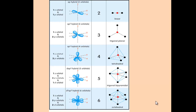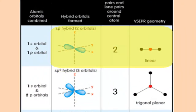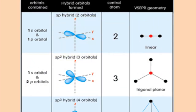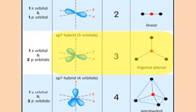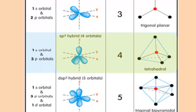Another item I'll point out is that the electron pair geometry of the central atom corresponds directly to the type of hybridization that central atom underwent. If the geometry around the central atom is linear, then that atom underwent sp hybridization. If the geometry is trigonal planar, the atom underwent sp2 hybridization. If the geometry is tetrahedral, it underwent sp3, and so on.